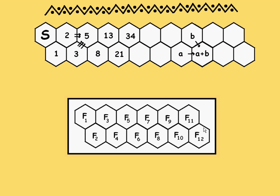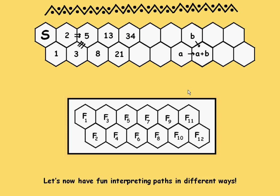So Fibonacci numbers appear in this puzzle. Each term is the sum of the two numbers before it, matching the Fibonacci numbers. In the original puzzle, there are F12 — the 12th Fibonacci number — of ways to get from start to end, and that's 144. It's also convenient to say there's one way to get from start to start: do nothing, you're already there. So we have a very visual model of the Fibonacci numbers now — let's have fun interpreting these paths in interesting ways.